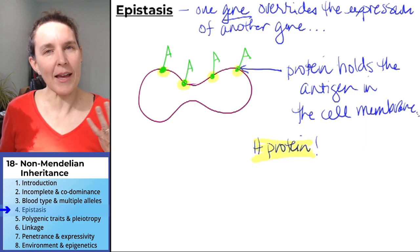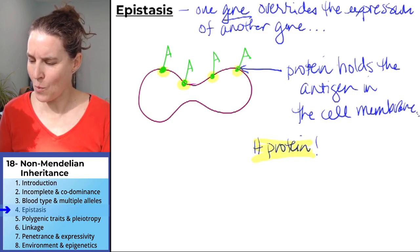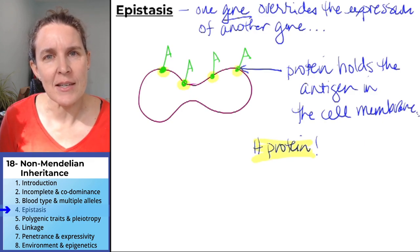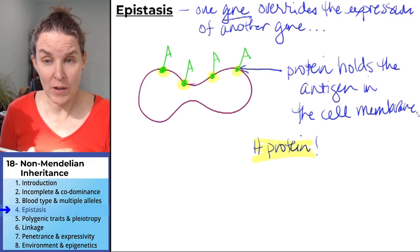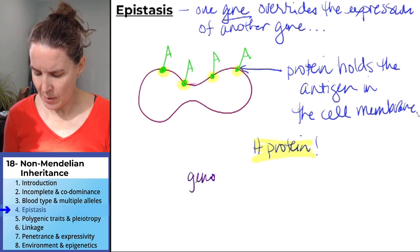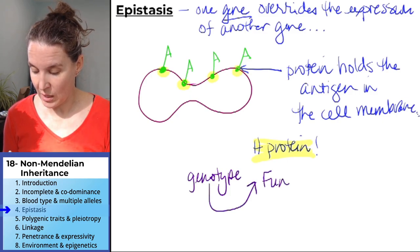Okay. What happens? Just go with me here. Take a wild guess. What do you think happens if you don't make a functional H protein? What if you have a genotype that leads to funky H protein?